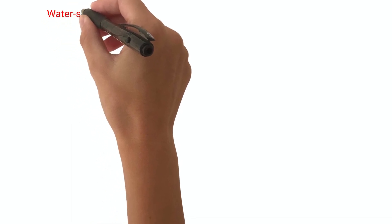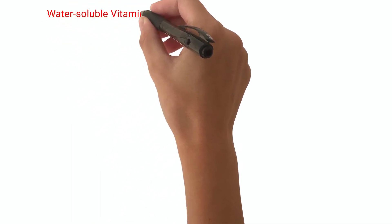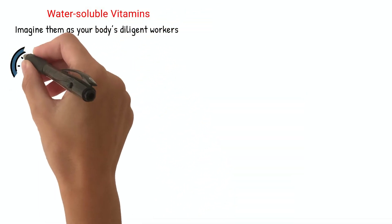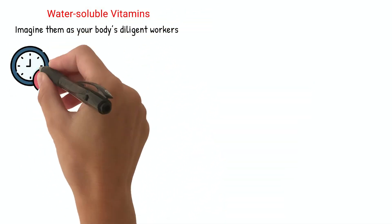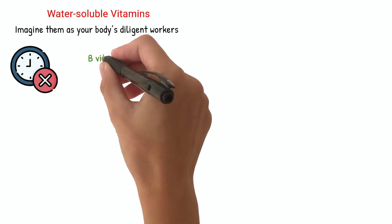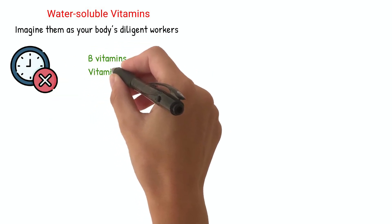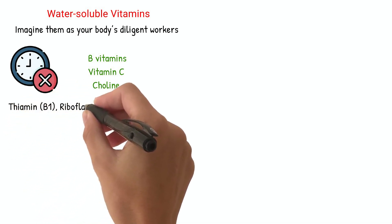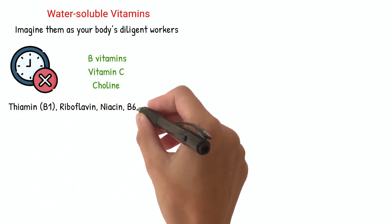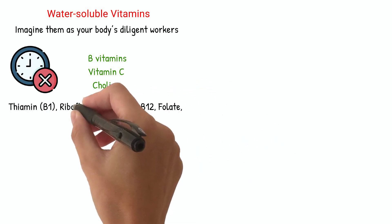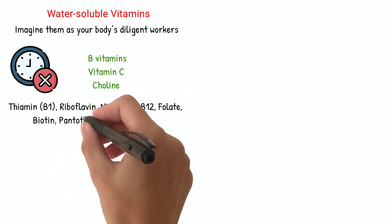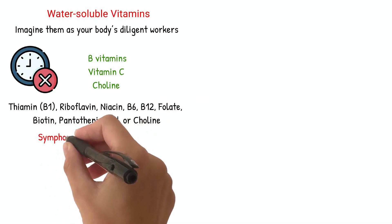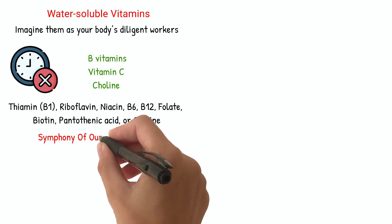Let's start with a splash into the world of water-soluble vitamins. Imagine them as your body's diligent workers, always on the move and unable to take a break. These include the B vitamins, vitamin C, and choline. Each of these vitamins — be it thiamin (B1), riboflavin, niacin, B6, B12, folate, biotin, pantothenic acid, or choline — has its unique role, akin to different musicians in an orchestra, each contributing to the symphony of our body's functions.